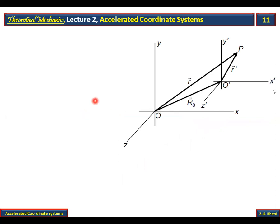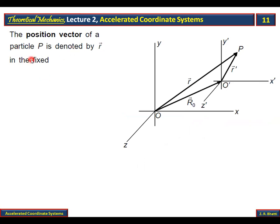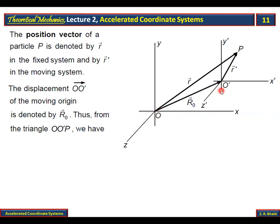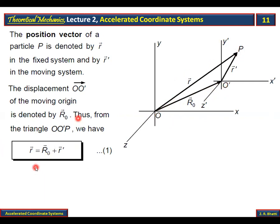Once again I show the diagram for your convenience. The position vector of a particle P is denoted by r in the fixed coordinate system. In the moving coordinate system, the position vector is denoted by r-dash. The displacement of the moving origin O-dash from the fixed origin is denoted by R-naught.